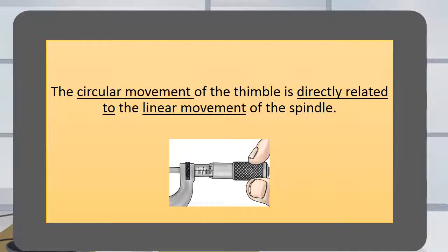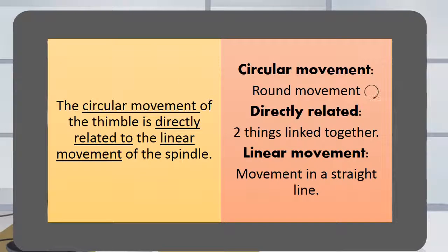The circular movement of the thimble is directly related to the linear movement of the spindle. Circular movement means round movement. Directly related means that two things are linked together. Linear movement is movement in a straight line.